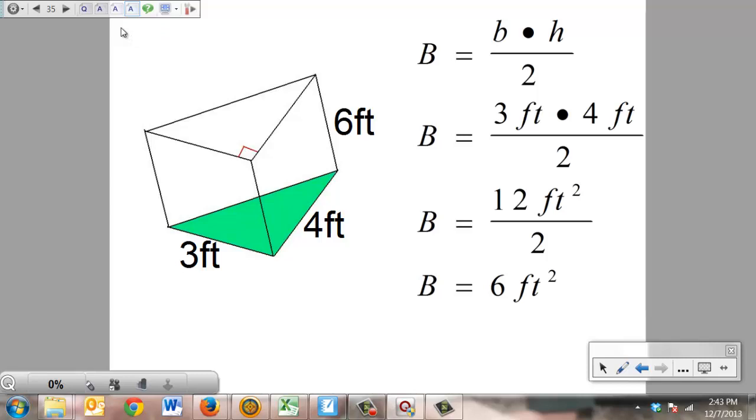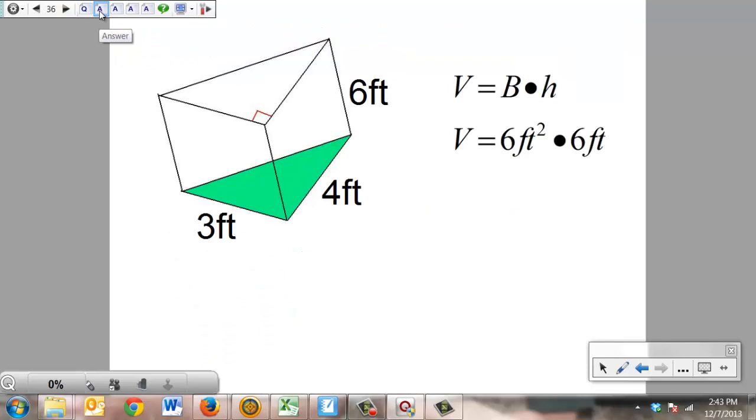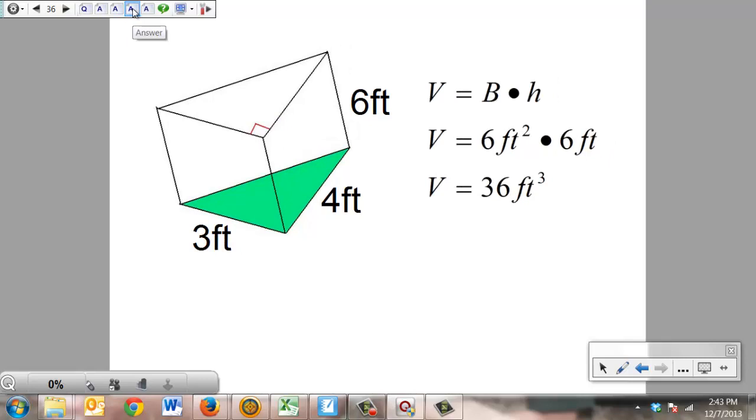But I'm not done. That's just the base area. Now from there, I've got to go to the volume, which equals base area times height. The volume we just found out is going to be 6 feet squared times the height, which we have right here, of 6 feet. 6 times 6 is 36. Feet squared times feet is feet cubed. Circle your answer. Easy math. Anybody can do these things. Just simple little puzzles to put together.